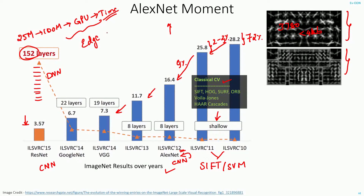Currently, there is research and investment going on in this area — how to come up with lightweight models with less execution cost so they can be deployed on edge devices. In parallel, people in the industry are also trying to come up with boards like Movidius, Jetson, TPUs, etc., so that these small boards can run machine learning models.